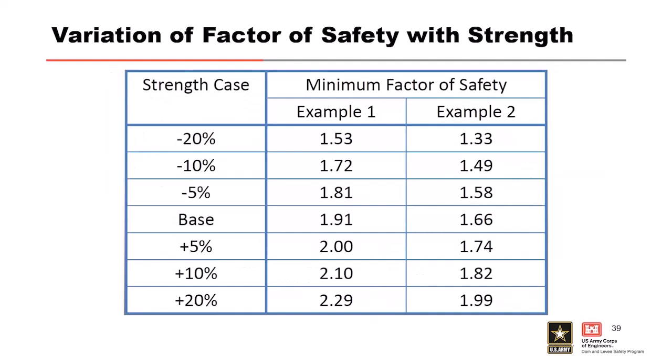Strength changes have a much larger effect. For the base case factor of safety of 1.7, reducing strength by 20% drops the factor of safety to 1.3, while increasing strength by 20% raises it to almost 2.0. This indicates you need to carefully characterize your material strength properties. You don't need to spend a lot of time on unit weights—get a reasonable value and move on. But for strengths, you need solid justification for your selected values, especially for the weakest layers in your embankment, which control your analysis.